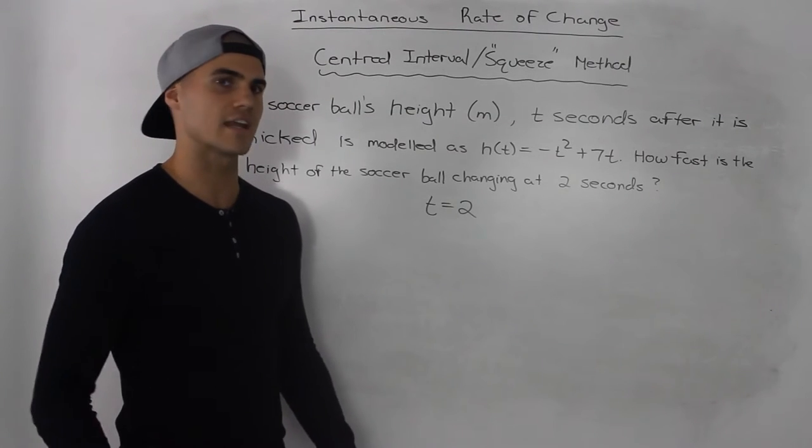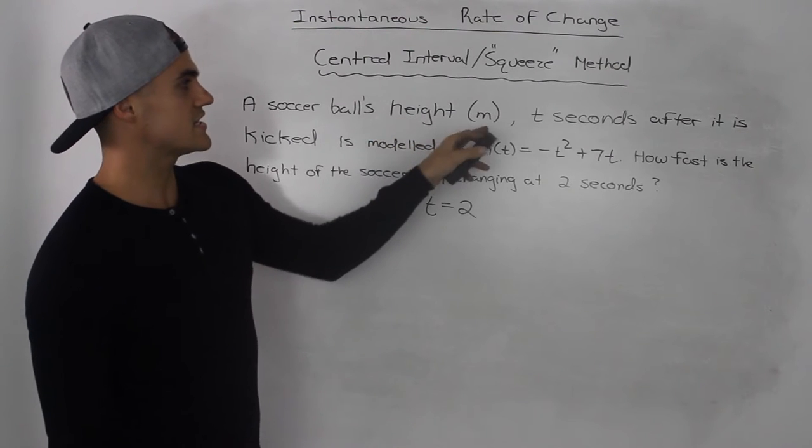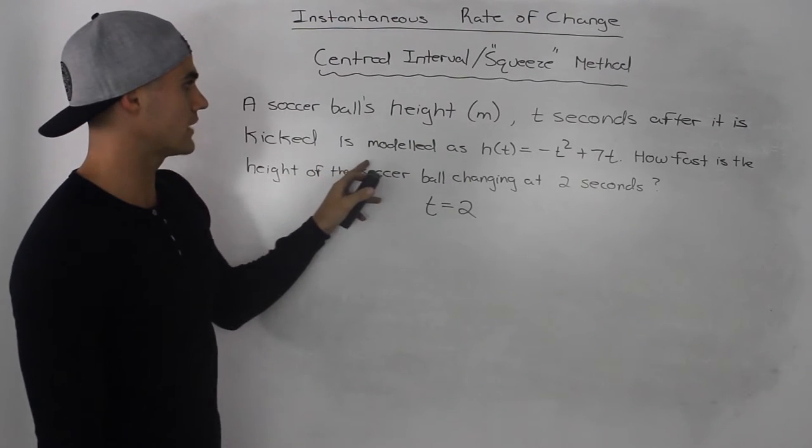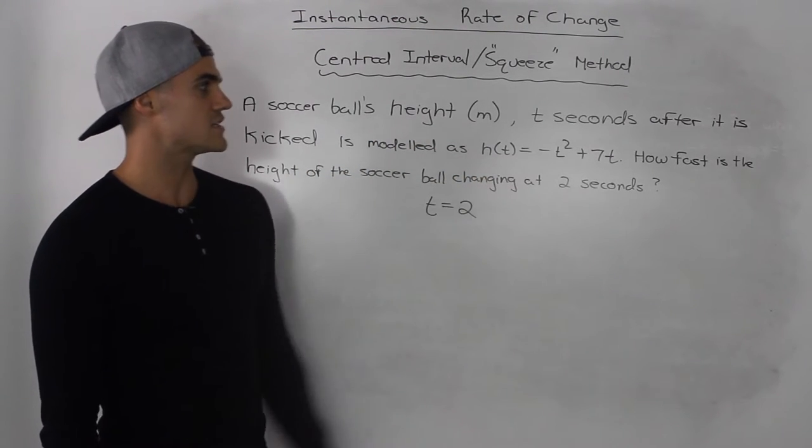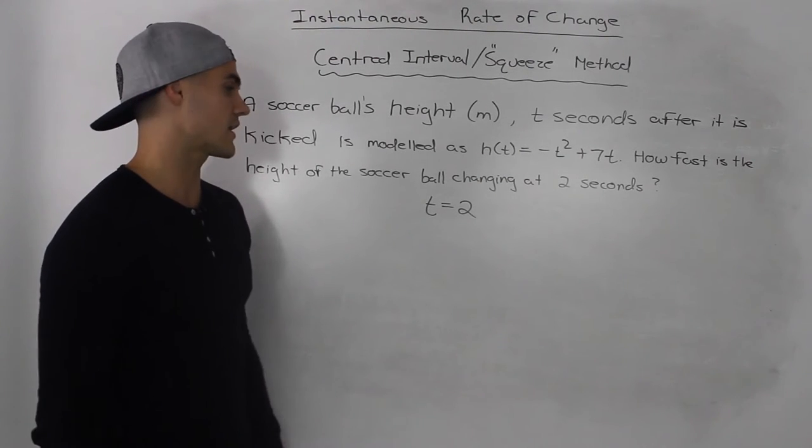Hey, what's up guys? So moving on to the next example, a soccer ball's height in meters, t seconds after it is kicked, is modeled as h(t) = -t² + 7t. How fast is the height of the soccer ball changing at 2 seconds?